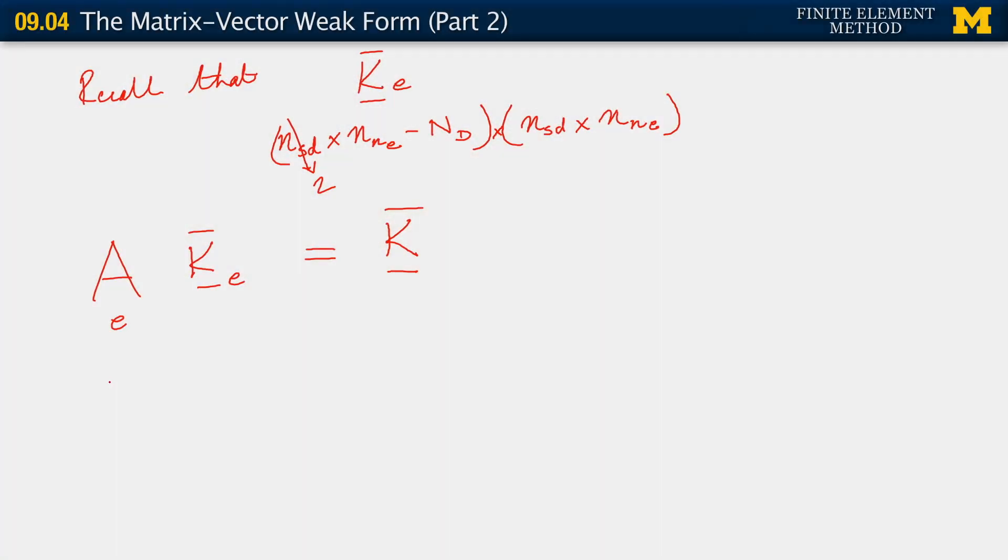Look at every local degree of freedom from any element that has the same global degree of freedom and add up contributions in the matrix. And the same way for our vectors, f bar internal e. The assembly of all of these gives us an f bar. This assembly process is no different.